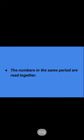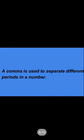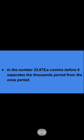The numbers in the same period are read together. A comma is used to separate different periods in a number. In the number 32,678, a comma before 6 separates the 1000s period from the 1s period.